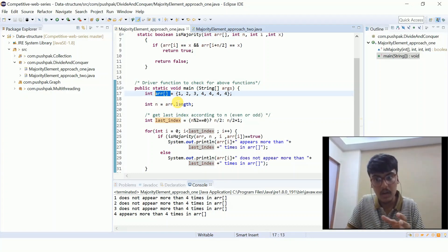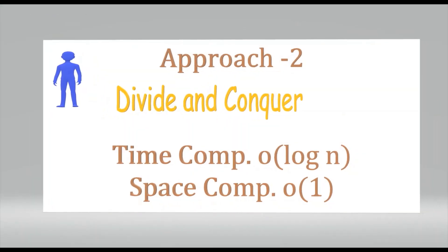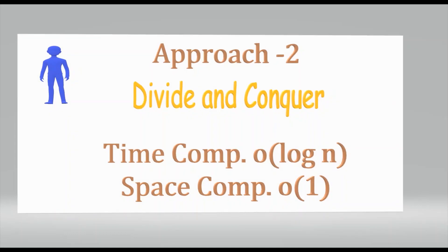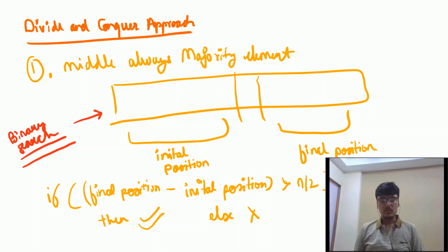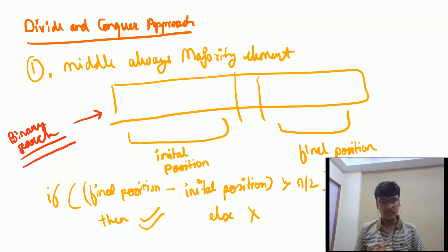Now we will try to decrease the time complexity by using another programming paradigm: divide and conquer. In order to reduce the time complexity, we will use divide and conquer, which takes a bigger problem, divides it into smaller subproblems, and then solves them.